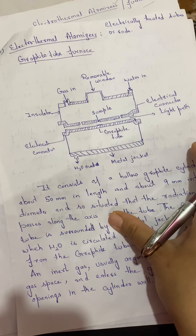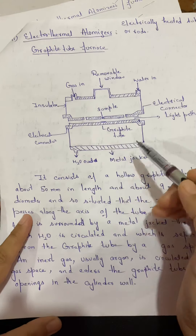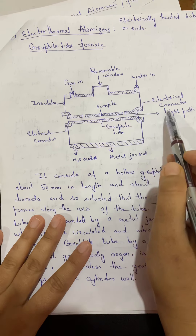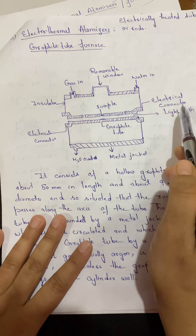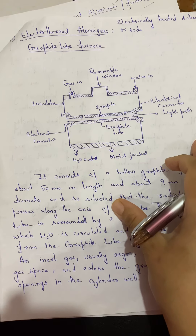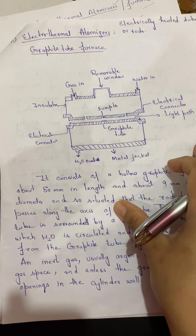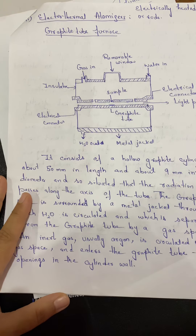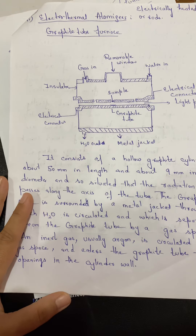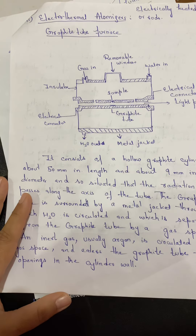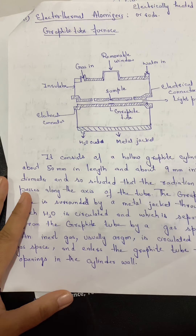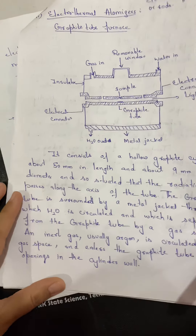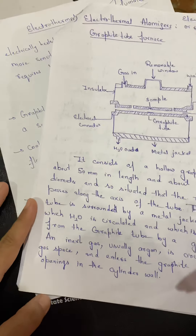The atoms absorb light and go to higher energy states. Whatever light remains passes through the window and goes to the monochromator and detector, which analyze which wavelengths have been absorbed. Since we already know the characteristic wavelengths, we can identify which elements are present. The amount of absorption also indicates the concentration of the element in question.